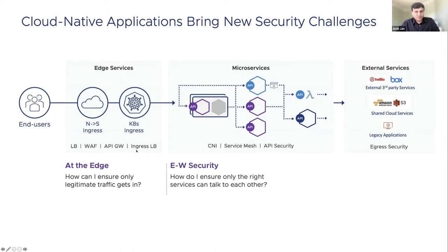As we enter into the microservices network, we need to worry about lateral movement of threats and least-privileged communication between services and data. At the microservices network, we enforce security controls using CNIs, Kubernetes policies, and most recently using service mesh at the application and API layer.